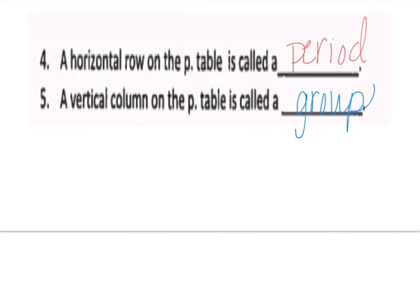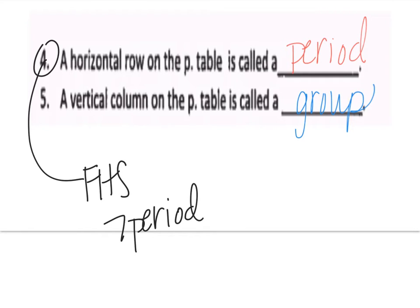On the periodic table, the horizontal rows we call periods. The vertical columns are called groups. One way to help you remember this is the periods, just like FHS, the periodic table has seven periods, so that might be one way to, when you get to the test, to remember the difference between period and groups.